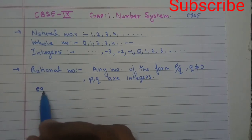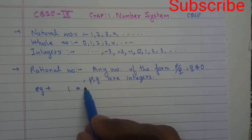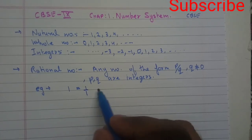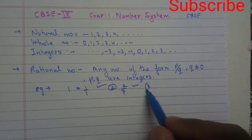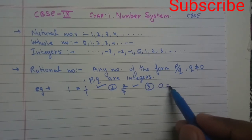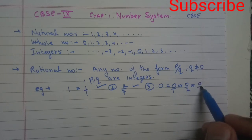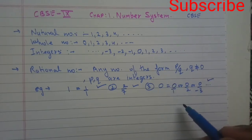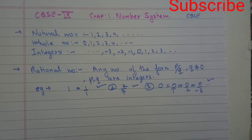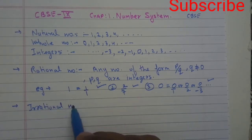For example, 1 is a rational number because we can write it as 1 by 1. Similarly, 2 by 7 is also a rational number. Also, 0 is a rational number because we can write it as 0 by 1, or 0 by 2, or 0 by minus 3 — in many forms. So 0 is also in p by q form, making it a rational number.